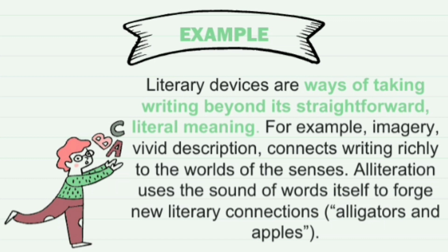Literary devices are a way of writing beyond straightforward literary meaning. For example, imagery — vivid description — connects writing richly to the world of the senses. Alliteration uses the sounds of words themselves to forge new literary connections, such as 'Alligators and apples.'